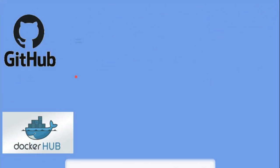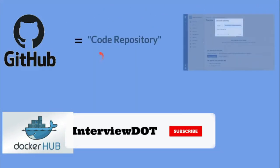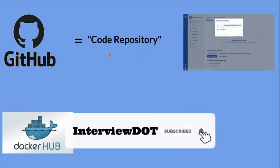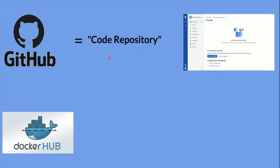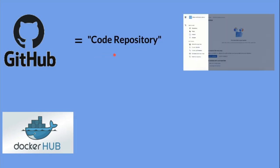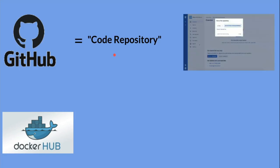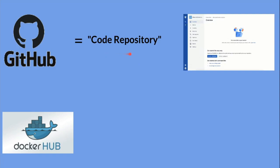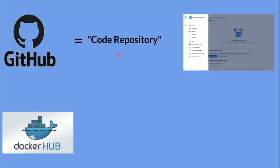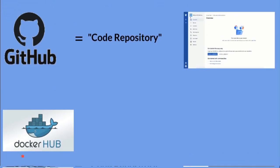So what is GitHub? GitHub is a code repository where we store our code. It might be C, C++, Java, Kotlin, Scala, JavaScript — it might be any programming language. GitHub helps us to store our code. It's a code repository.